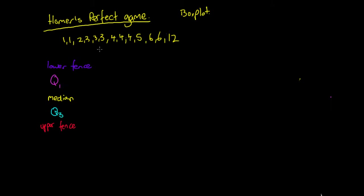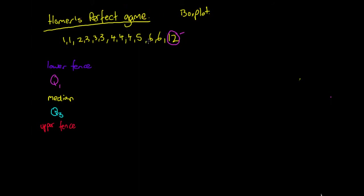What I've got here is I went bowling the other day with 12 of my friends and we went to a 10 pin bowling alley and we all bowled pretty averagely. Some of us got 6 strikes, but this one guy Homer bowled 12 strikes and he dominated. He bowled a perfect game, and this here is Homer's perfect game. So today we're going to take this data and put it into a box plot.